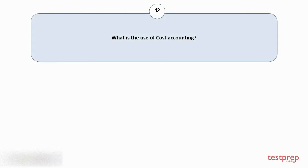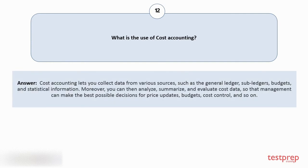Question number 12: What is the use of cost accounting? Cost accounting lets you collect data from various sources, such as the general ledger, subledgers, budgets, and statistical information. Moreover, you can then analyze, summarize, and evaluate cost data, so that management can make the best possible decisions for price updates, budgets, cost control, and so on.